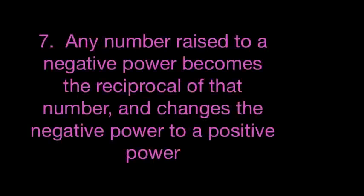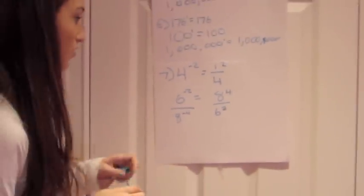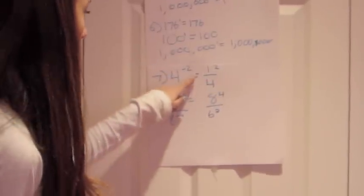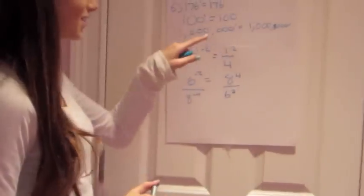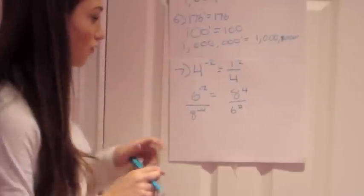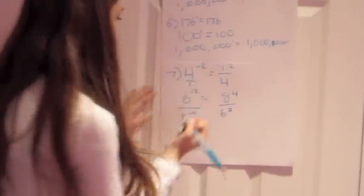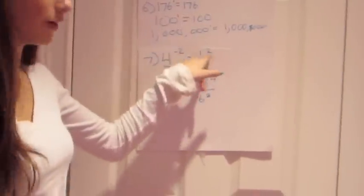The seventh rule is that any number raised to a negative power becomes the reciprocal of that number and changes the negative power to a positive number. For example, 4 raised to the negative second power is not the final answer. So you would have to make it the reciprocal and make the exponent a positive. So you would do 1 to the second power over 4. 1 over 4 is the reciprocal because 4 actually equals 4 over 1, so the opposite of that would be 1 over 4, and the opposite of negative 2 would be 2.